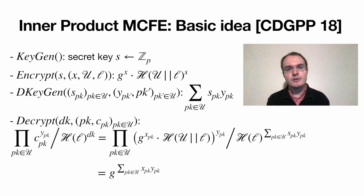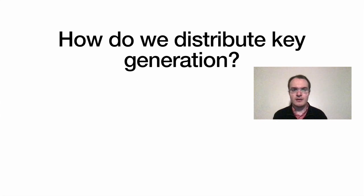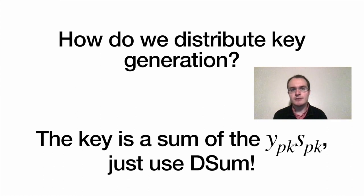So, how can we distribute the key generation in this scheme, so it gets closer to being a proper DDFE? Well, we said the key is the inner product between the vector y from the functional key, and the vector s of the secret key. Another totally equivalent way of looking at it is that it's the sum of the y's multiplied by the appropriate s's. If you see it as a sum, you realize that for key generation, you really want a decentralized, non-interactive way to evaluate this sum. But that's what we were talking about just a few minutes ago. That's DSum, which does indeed let us decentralize key generation.